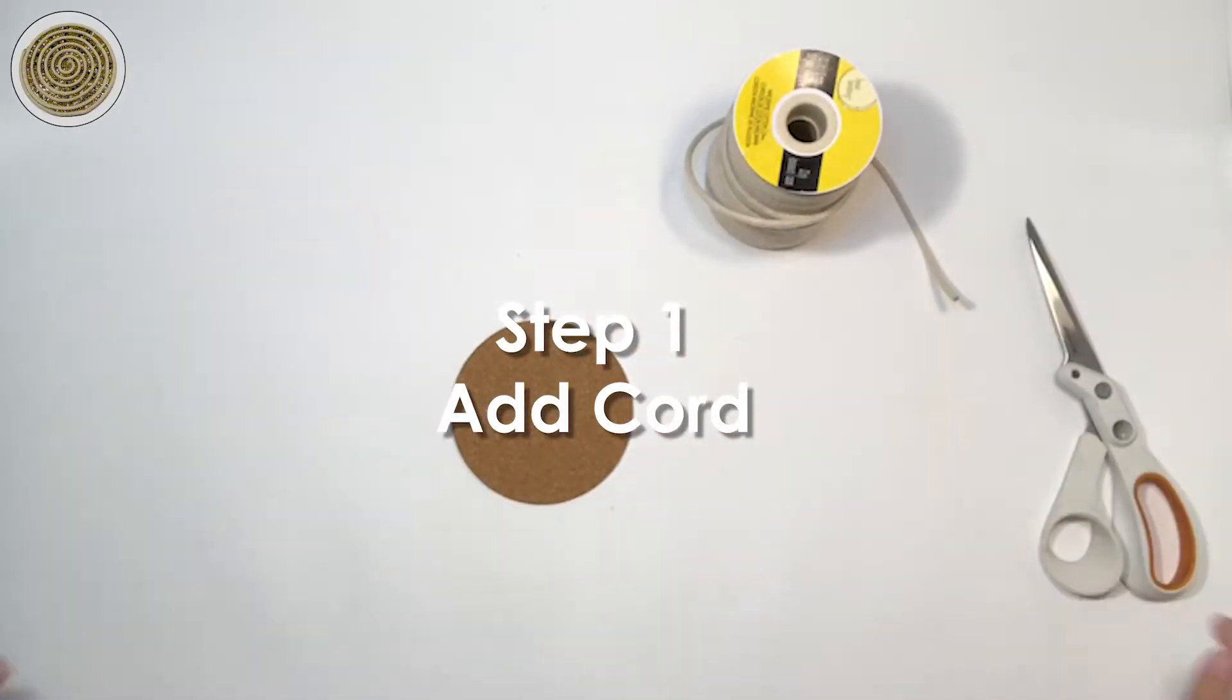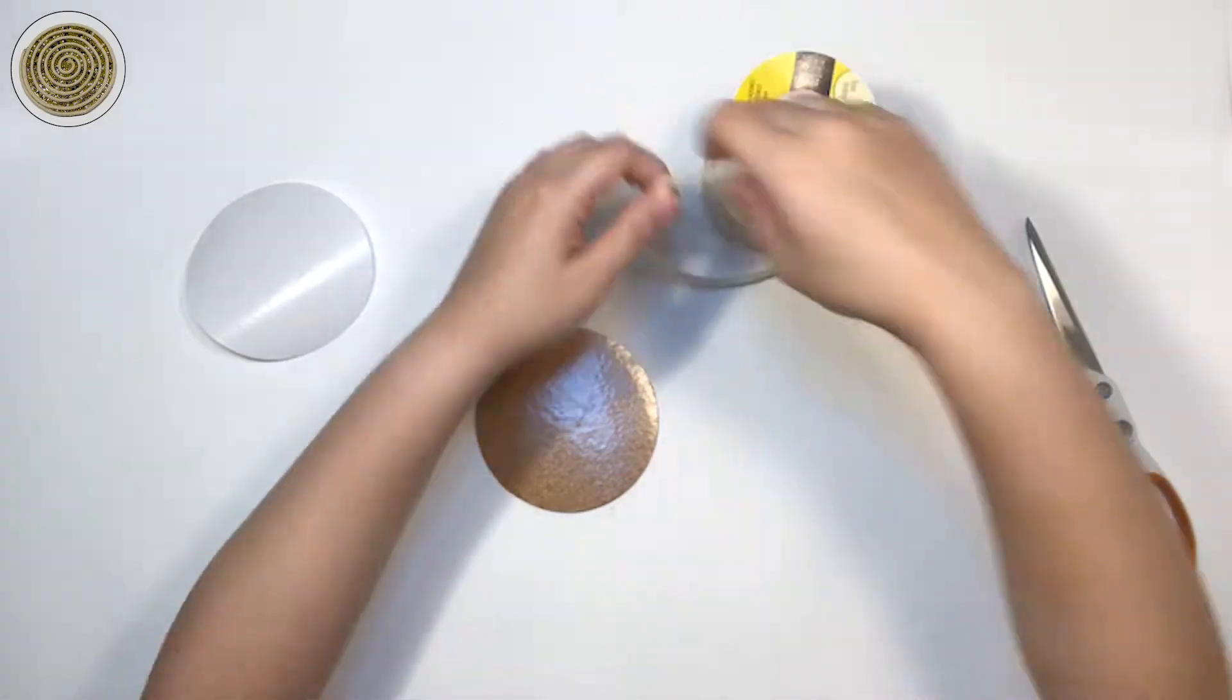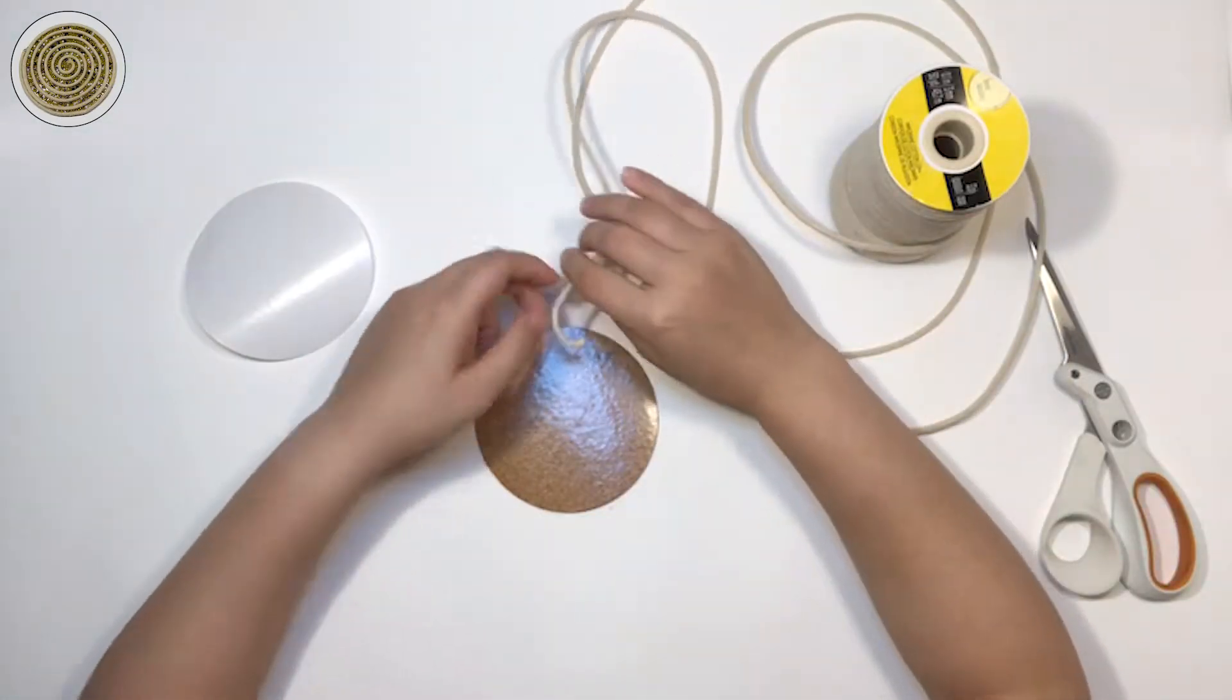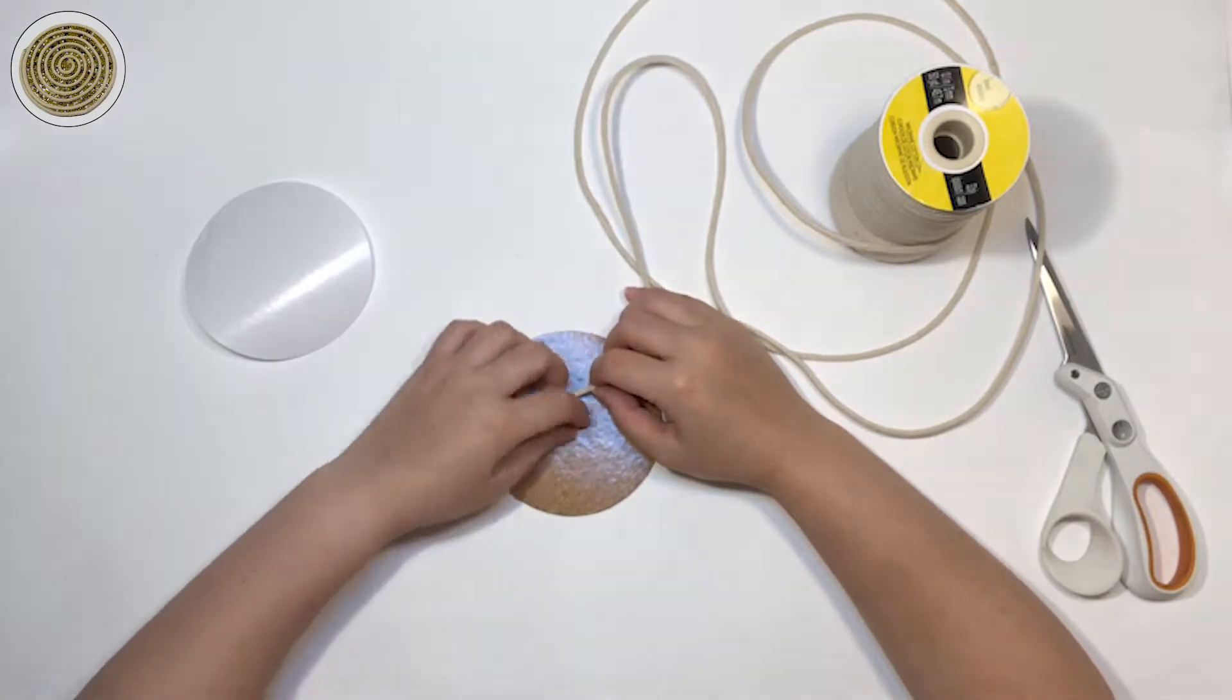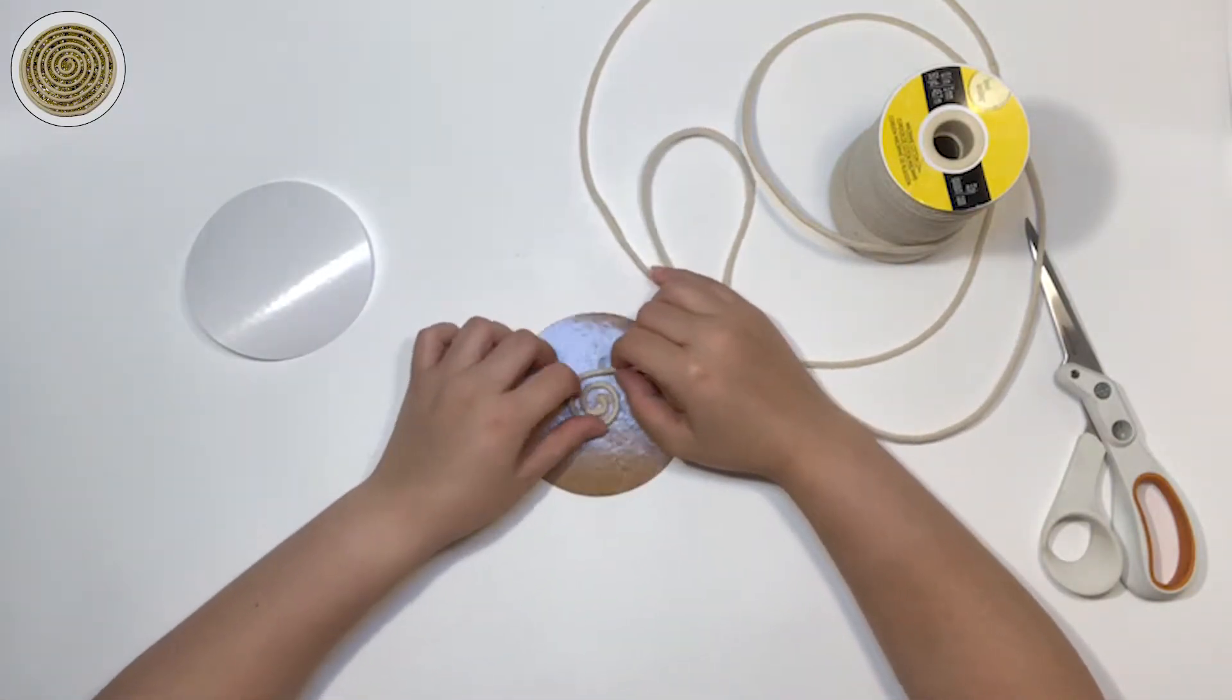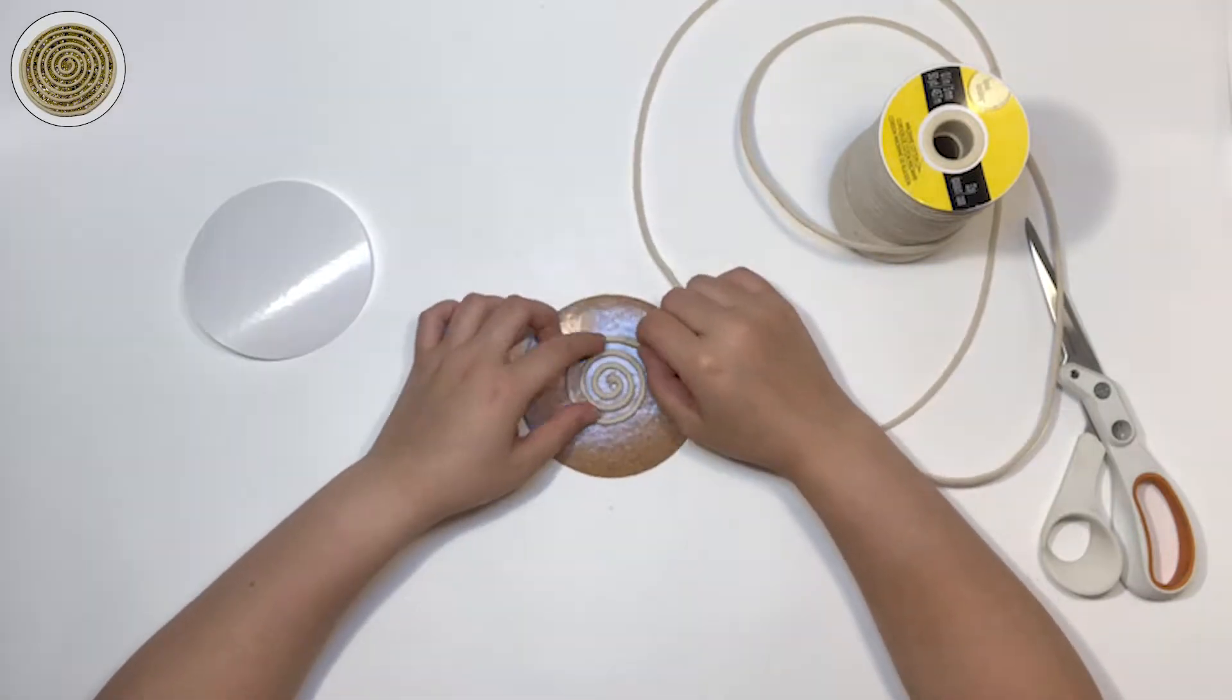Step one: add the cord. Remove the protective sticker from your coaster to expose the self-adhesive. Then begin to uncoil your thick cotton cord into a swirl pattern, leaving about one eighth of an inch spacing between the swirls. I like to take the cord directly from the spool.